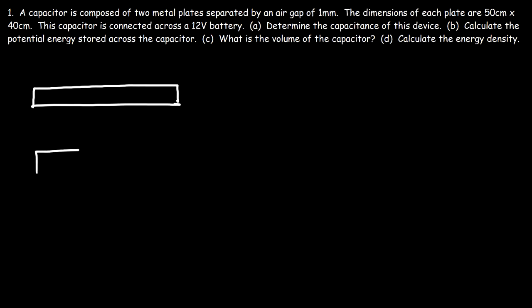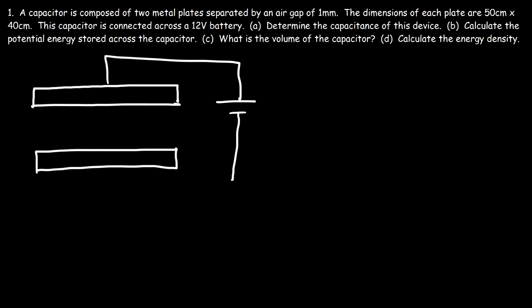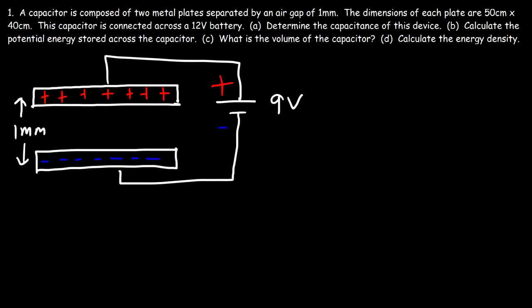So let's say these are the two metal plates connected across a battery. The positive terminal connects to one plate and the negative terminal to the other, so when fully charged, one plate has negative charge and the other has positive charge, with a distance of one millimeter between the plates. The capacitance is equal to the dielectric constant times the permittivity of free space, multiplied by the area of the plates divided by the separation distance.